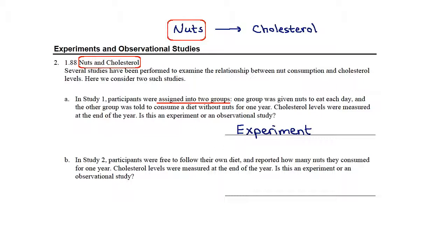In the second study, participants were free to follow their own diet — they were not told to eat or avoid nuts. They simply reported how many nuts they consumed, which sounds more like gathering information from a survey. The researchers did not try to control whether people ate nuts or how many, so this is an observational study.